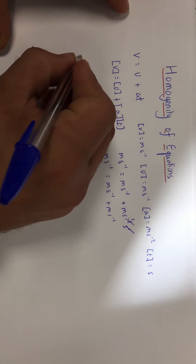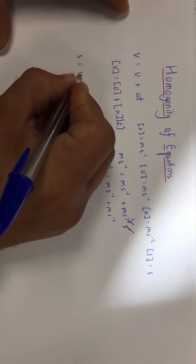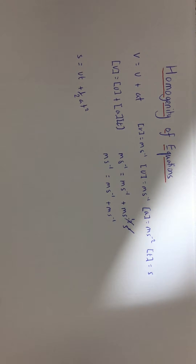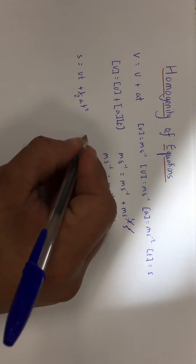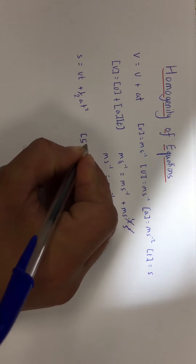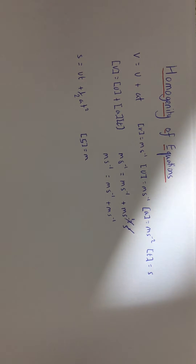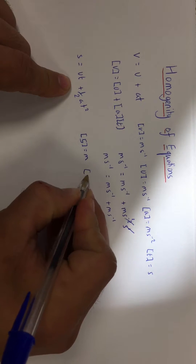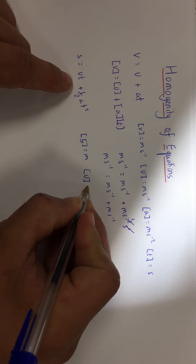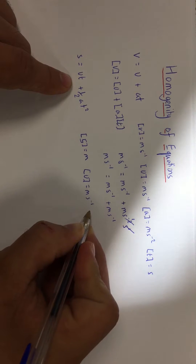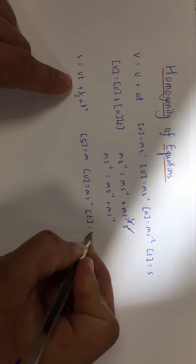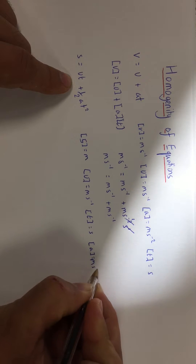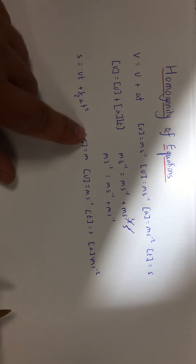Another SUVAT example that's a little different is s = ut + ½at². We follow the same process. s is displacement, so its unit is metres. For completeness: u (initial velocity) is m s⁻¹, t is seconds, and a is m s⁻².